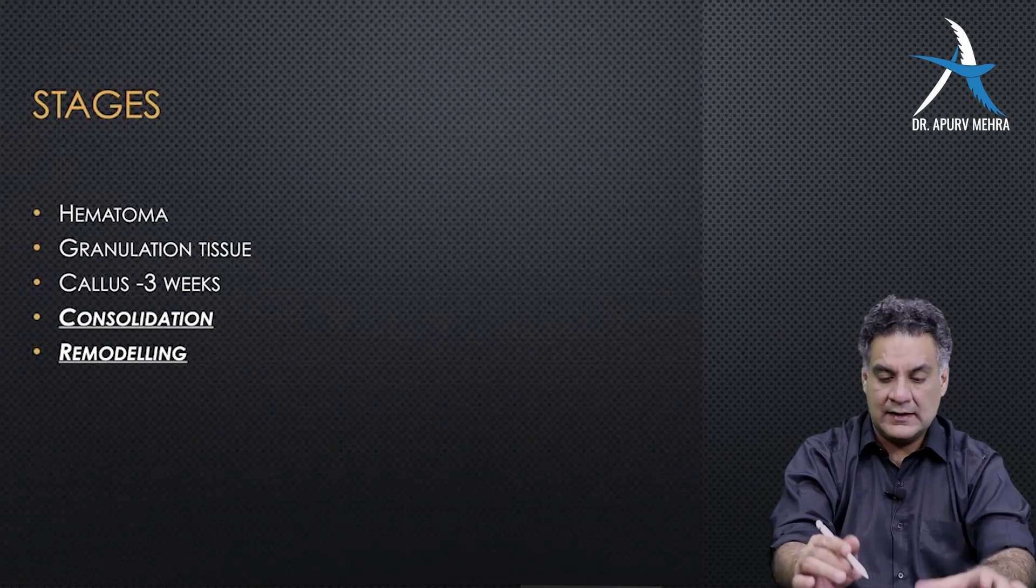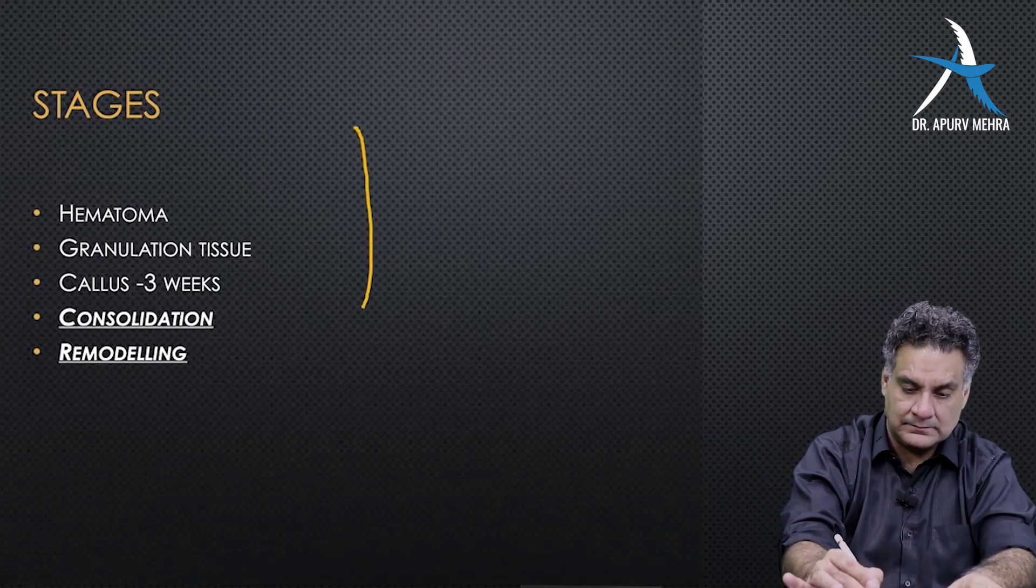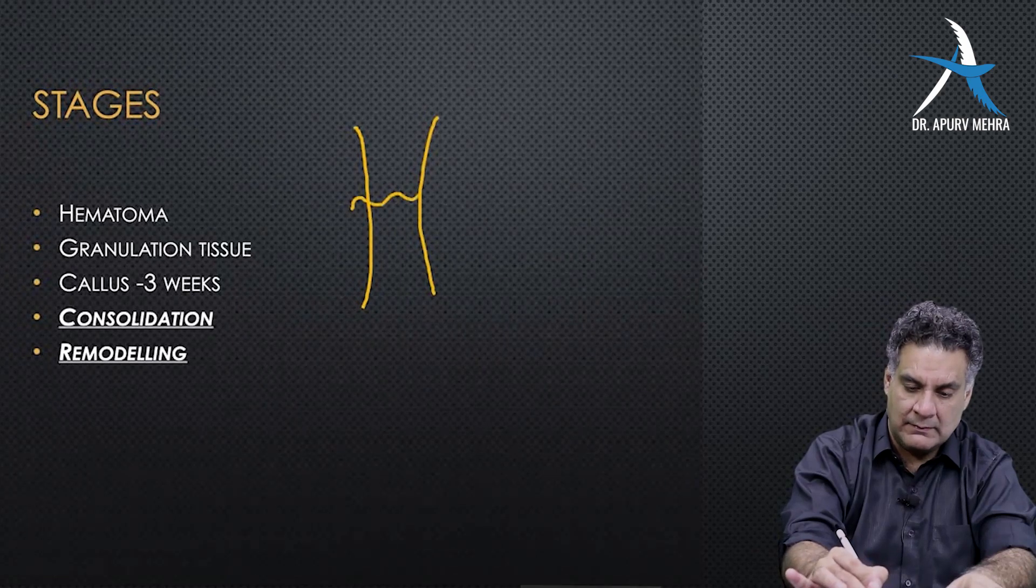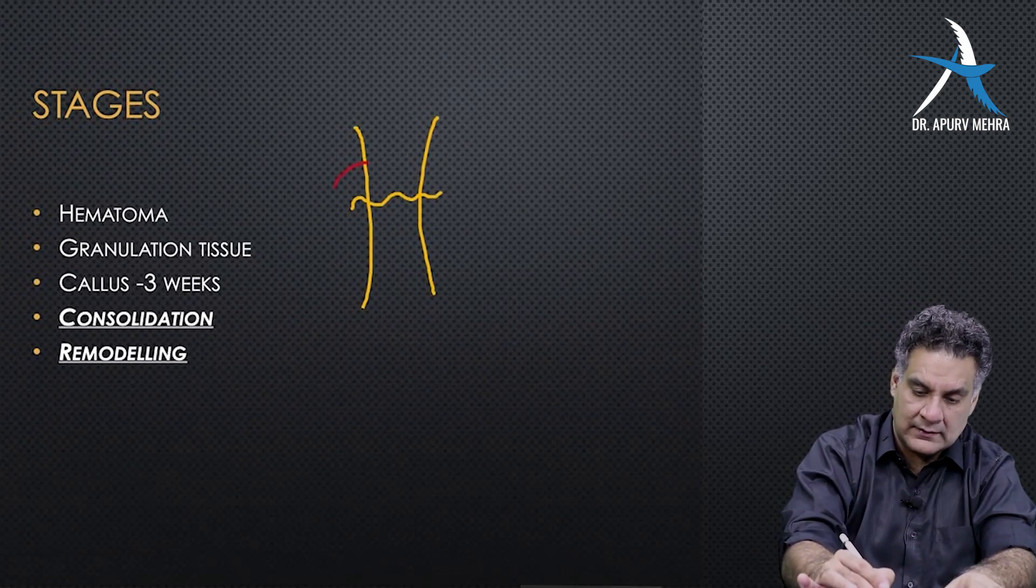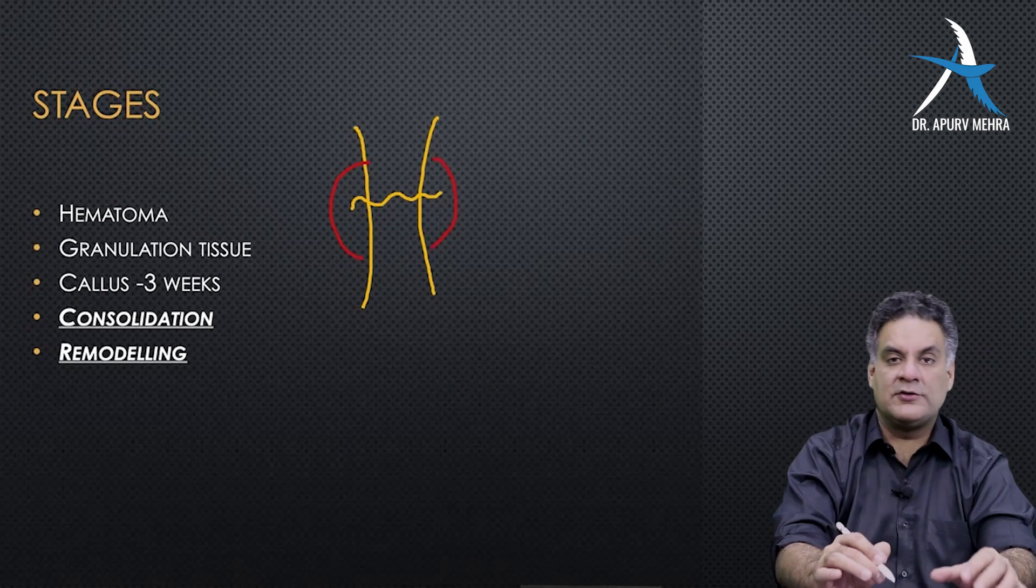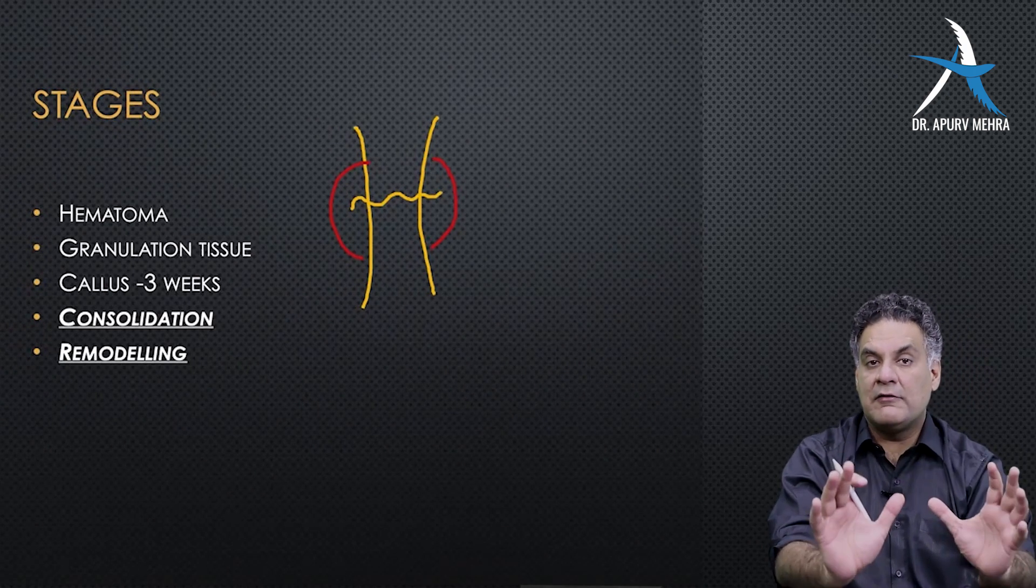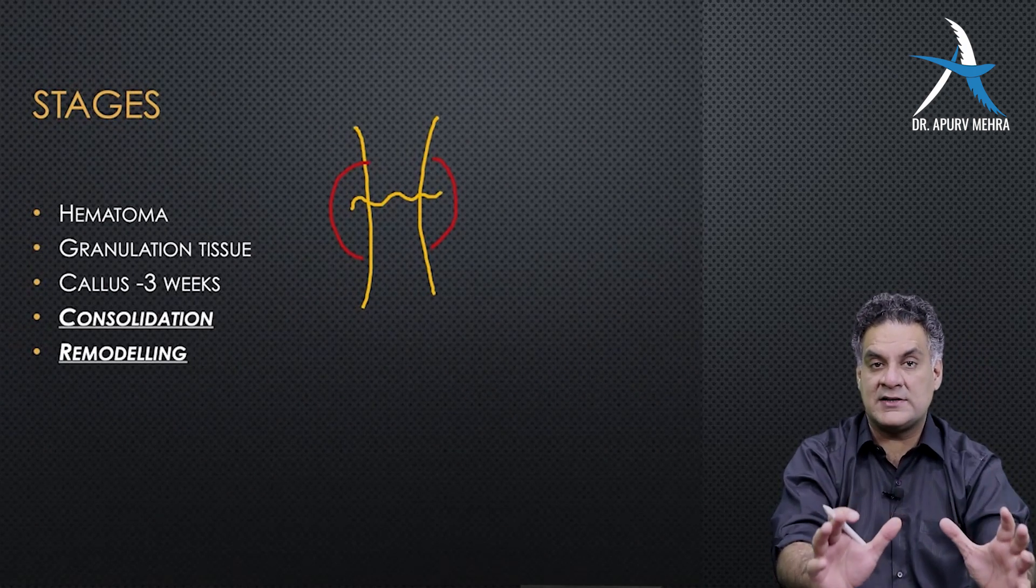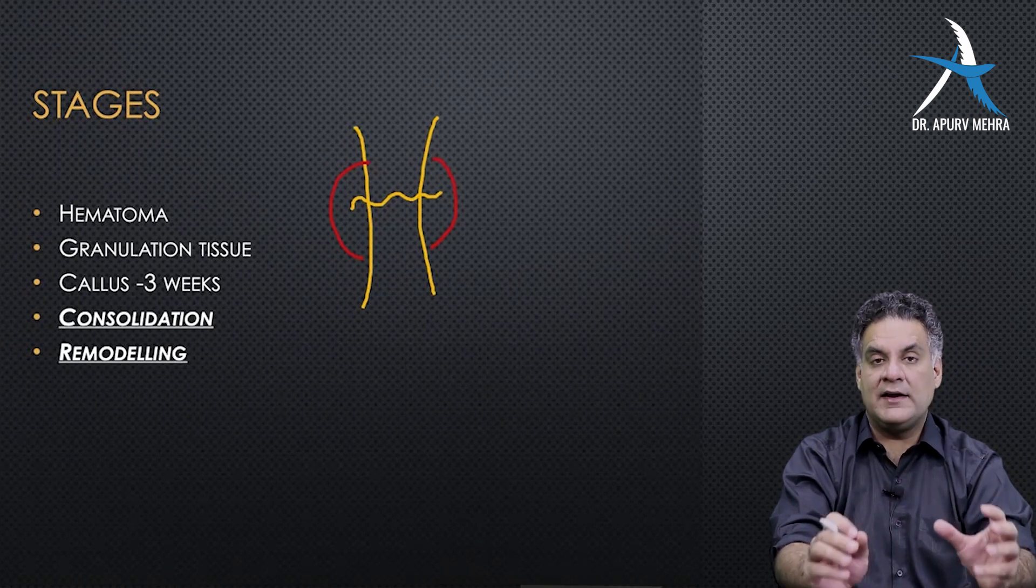Stages of Fracture Healing. If there is a fracture, there will be blood around it. This blood is an important source of nutrients and cells for the bone to unite. It is called Fracture Hematoma. Very important.